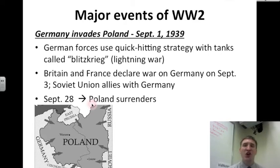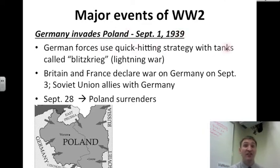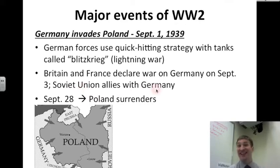Let's now talk about some of the major events of World War II. First, Germany invades Poland on September 1st, 1939. This starts the war. German forces use a quick-hitting strategy with tanks called the Blitzkrieg, which is German for lightning war. Then Britain and France declare war on Germany two days later, on September 3rd. The Soviet Union then allies itself with Germany, the Nazis and Hitler.